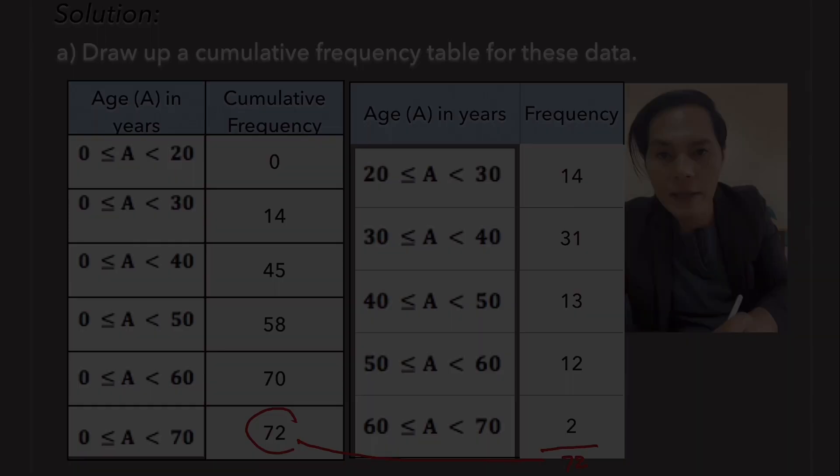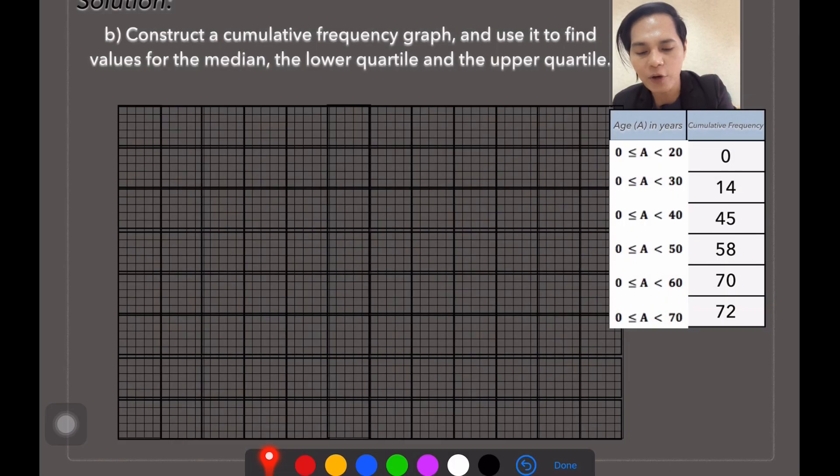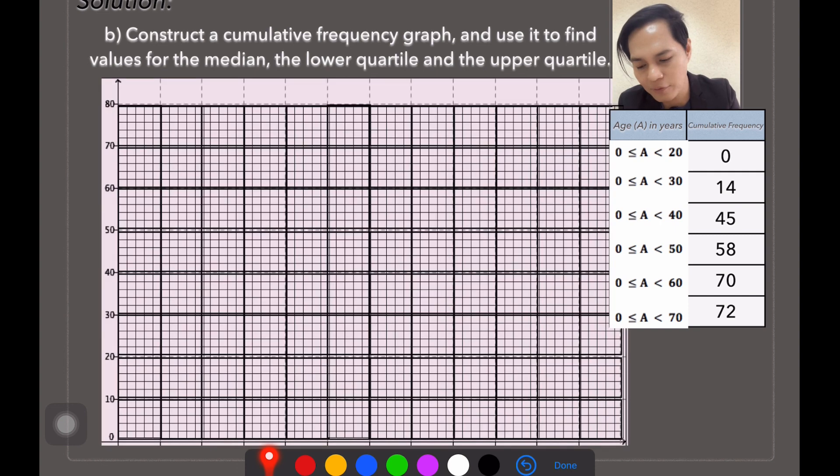So that's how you do that. Up next is, construct a cumulative frequency graph and use it to find the values for the median, the lower quartile and the upper quartile. Okay, in constructing a graph, we need the x and y axis. And look at here, in the graph that I have constructed...